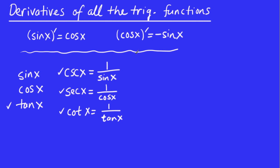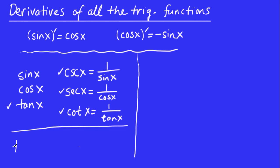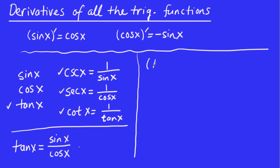Let's start off with finding the derivative of tan x. Remember that tan x is equal to sin x over cos x — that's just a trig identity. We can use the quotient rule to find the derivative of tan x, since it's expressed as sin x over cos x.